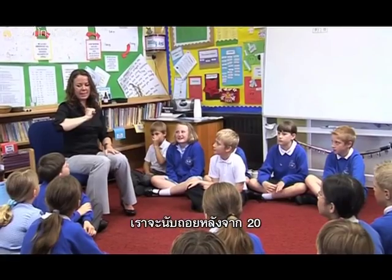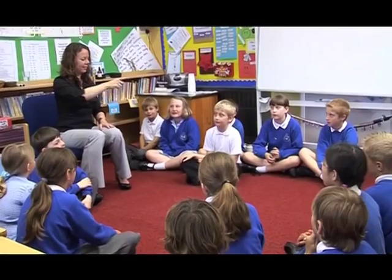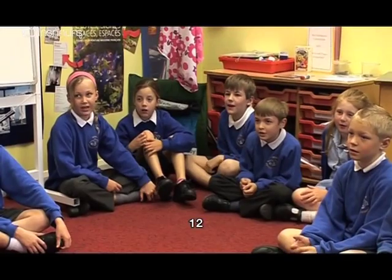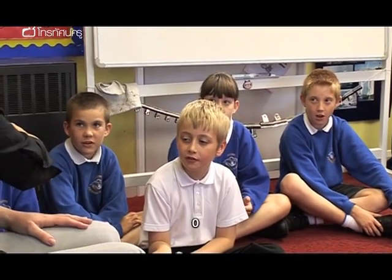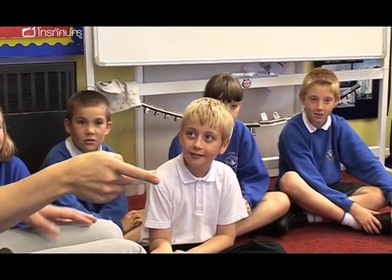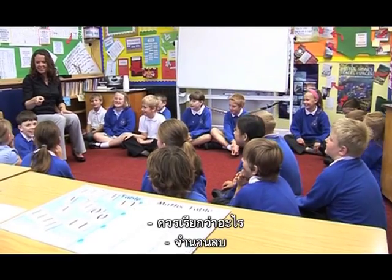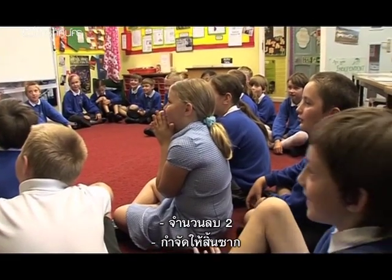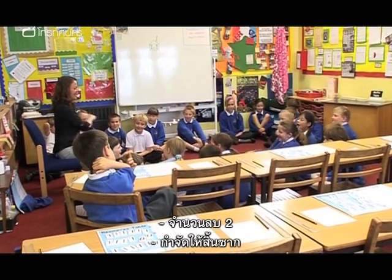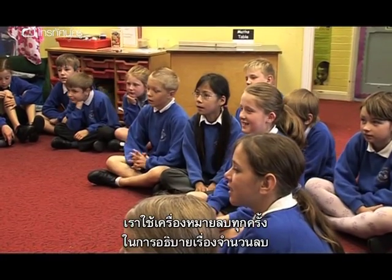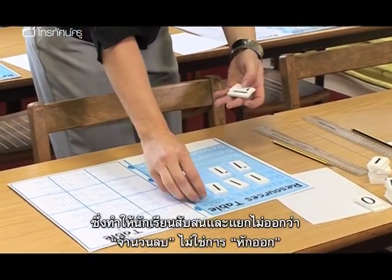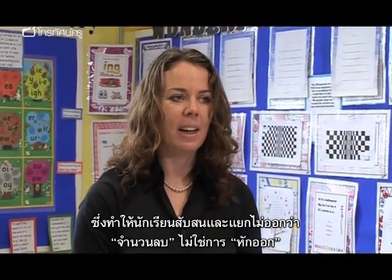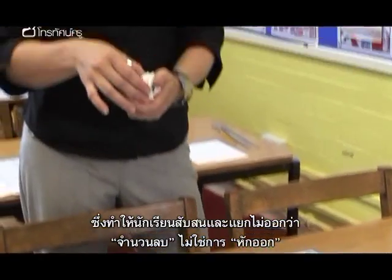We're going to count back from 20. 18, 16, 14, 12, 10, 8, 6, 4, 2, 0. Minus... What should it be? Negative. Negative 2. We used to use 'minus' all the time as the main way of describing negative numbers, but it confused the children. They didn't understand that a number 'minus' was something different from taking away.